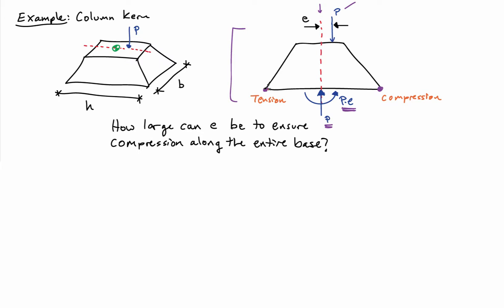If E gets too large, this moment will cause tension over here by superposition, because the force acting on the system gives me compression uniformly across the base. We can use superposition to answer this question. The stresses due to the axial force P on the bottom of the base are P over A, where A is just B times H.